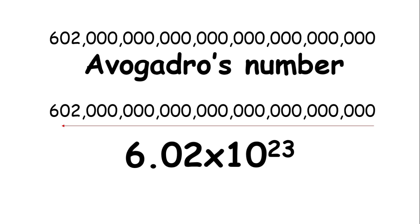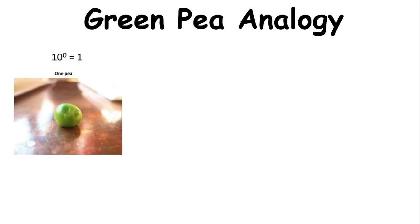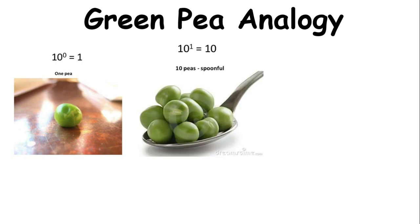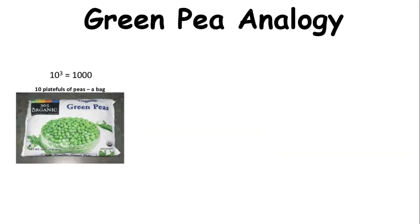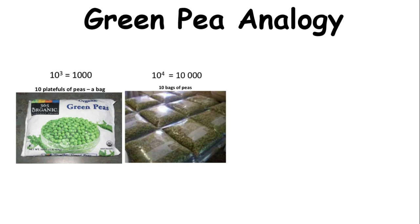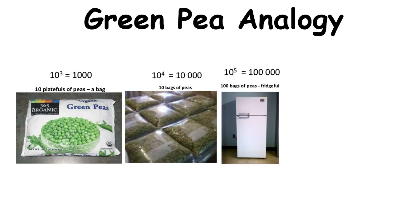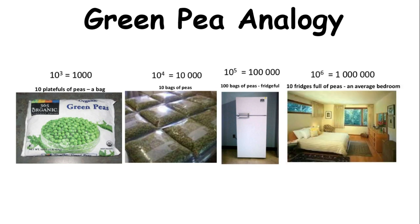To give you an image on how huge that number is, let's have the green pea analogy. 10 raised to 0 is equal to 1, so you will have 1 pea. 10 raised to 1 is equal to 10, so you will have a spoonful of peas. 10 raised to 2 is equal to 100, a plate full of peas. 10 raised to 3, you'll have a thousand. 10 raised to 4, you will have 10,000, that's 10 bags. 10 raised to 5, a fridge full of green peas. 10 raised to 6 is a million, an average bedroom.